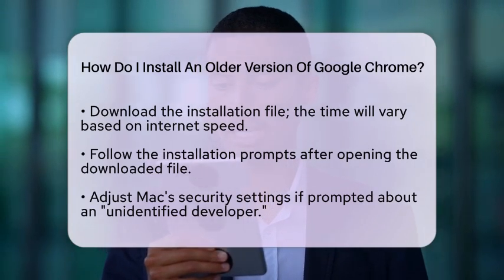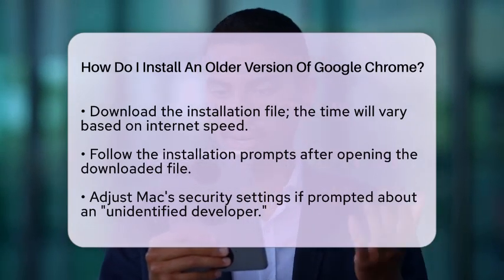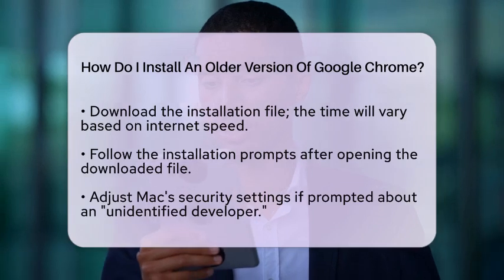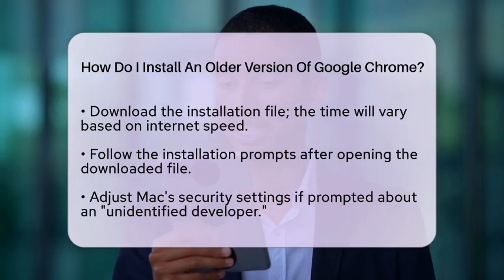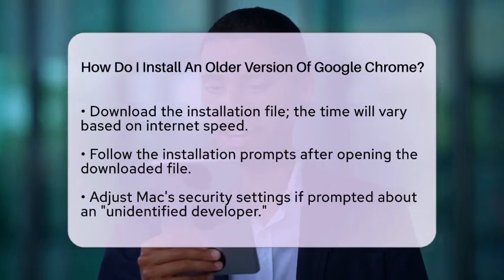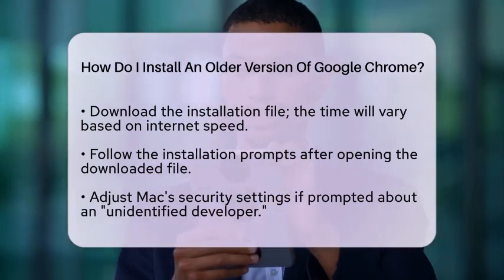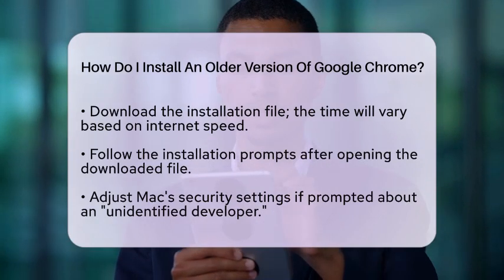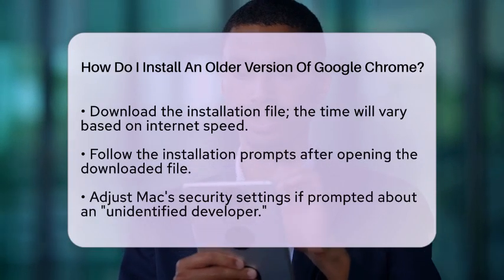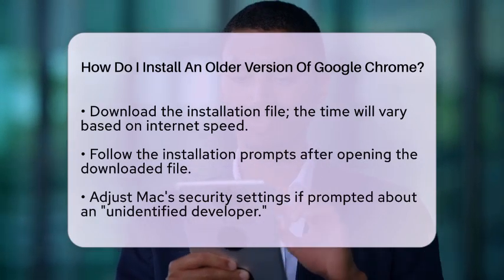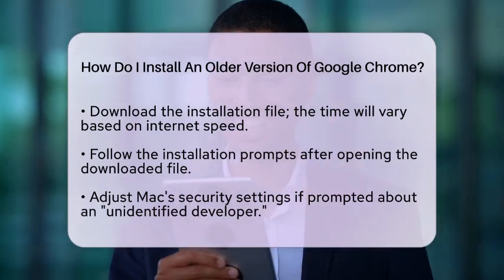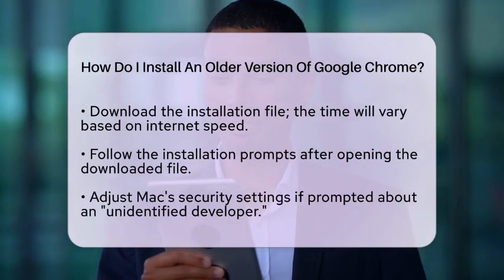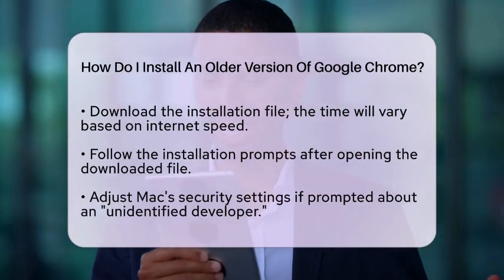If you see a message saying the app is from an unidentified developer, you may need to adjust your Mac's security settings to allow the installation. Finally, once the installation is complete, launch Google Chrome. You can set it up just like you would with any new application.